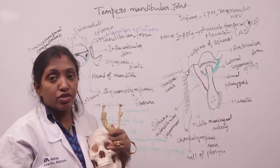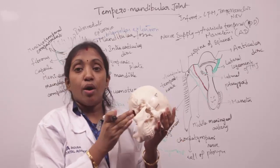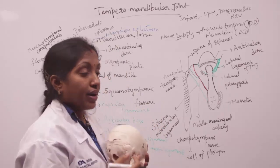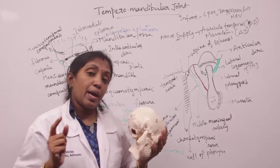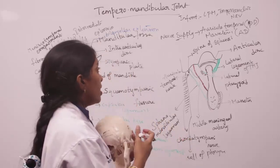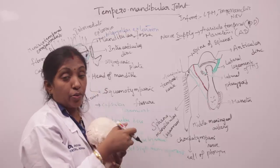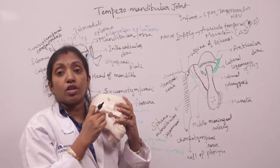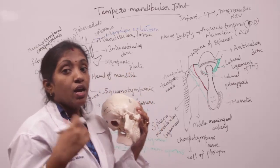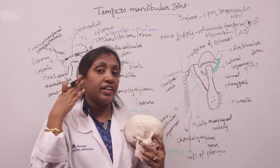Behind the temporomandibular joint we have the parotid gland, the superficial temporal vessels, the auriculotemporal nerve — which emerge from the apex of the parotid gland — and also the external acoustic meatus, which also forms a posterior relation.